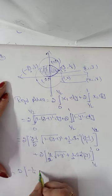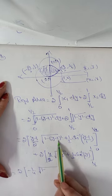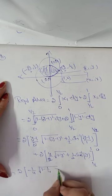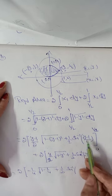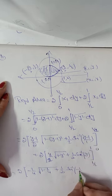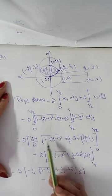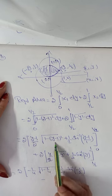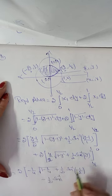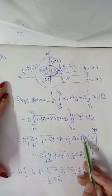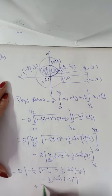Substituting the upper limit y = 1/2 into the first expression: (1/2 - 1) = -1/2, giving -1/4 · √(1 - 1/4) + 1/2 · sin⁻¹(-1/2). For the lower limit y = 0: the square root term becomes 0, and sin⁻¹(-1) = -π/2.